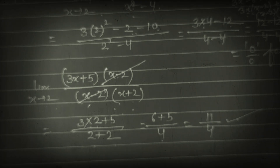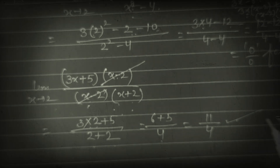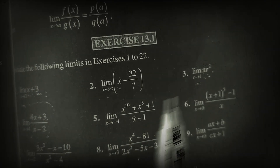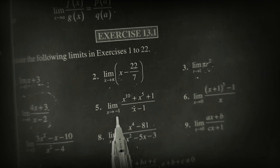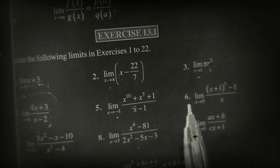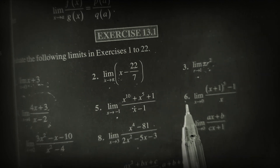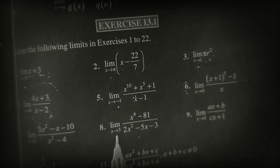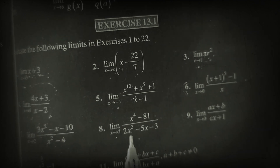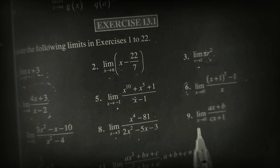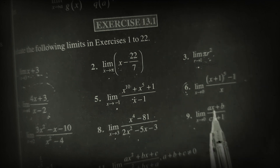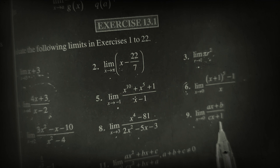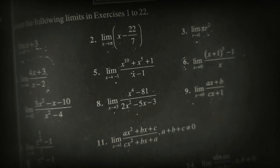In this way you can do questions 1, 2, 3, 4, and 5. Question 6 we will do by another method. Questions 7 and 8 by factorization method. Question 9 is simple — you can put x = 0 and the answer will be b. Question 10 we will do later.